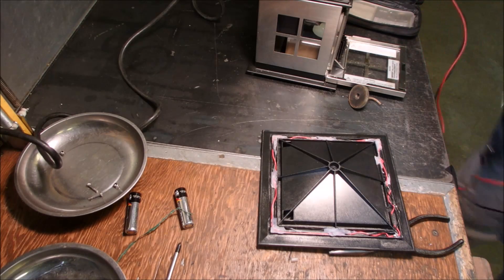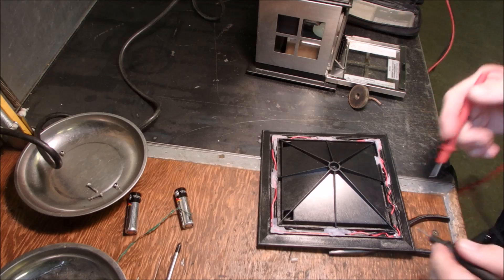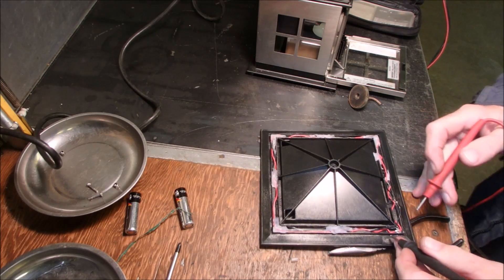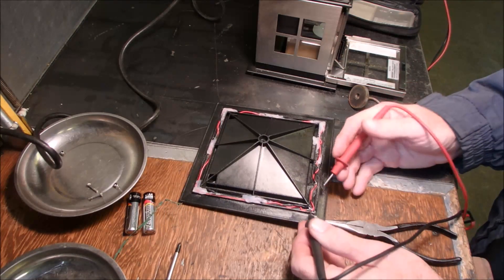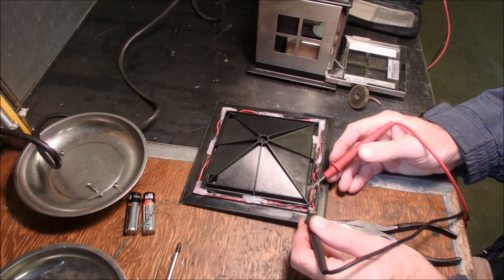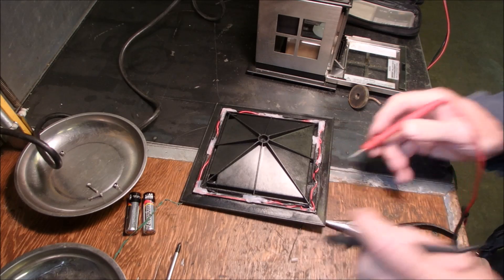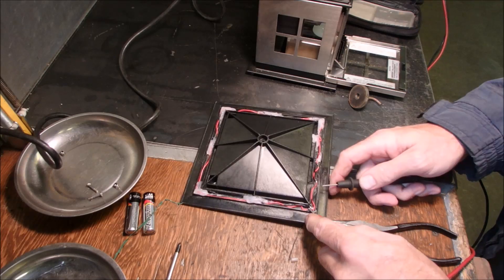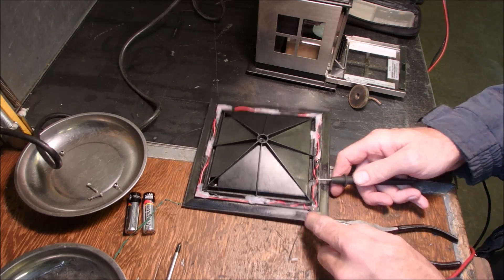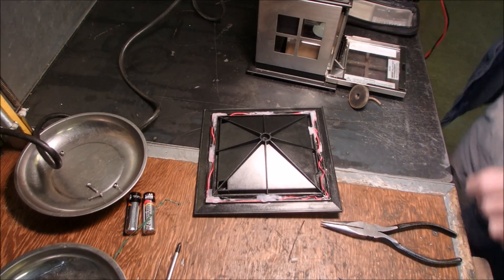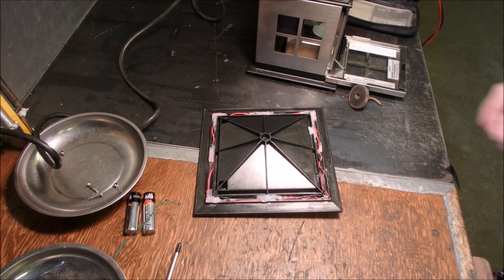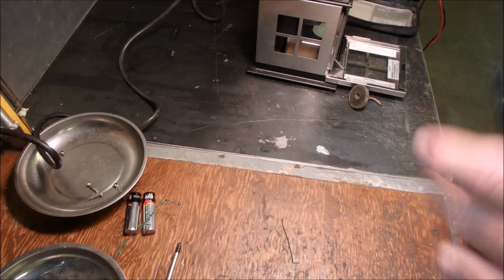So now I'm gonna take a resistance reading between the positive and the negative just to make sure I don't have a dead short. There's the red there, there's the red there, and the black there. Open one way. And if I flip these leads around I might get continuity because of the diodes. Nope. So now I'm gonna see if I can get this put back together again.